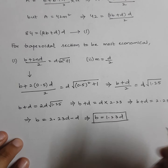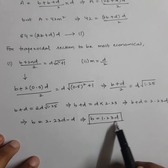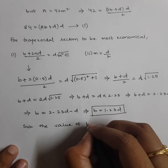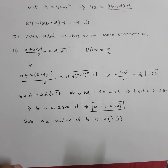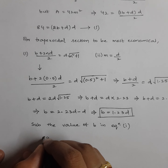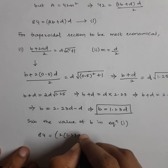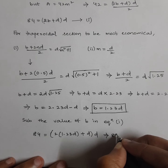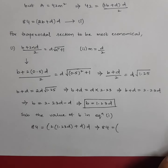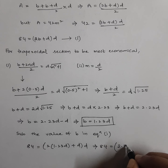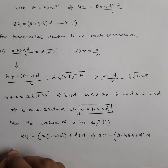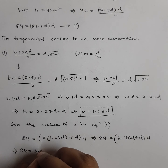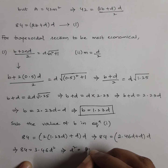Substituting B equals 1.23D into equation 1: 84 equals (2·1.23D + D)·D equals (2.46D + D)·D equals 3.46D². Therefore D² equals 84/3.46, giving D equals √(84/3.46).